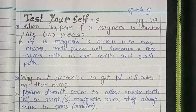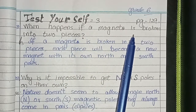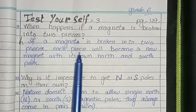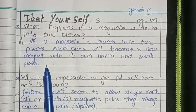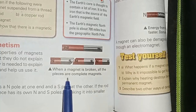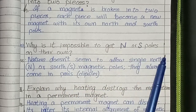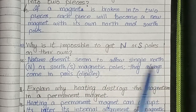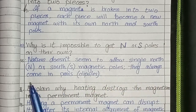Third Test Yourself, page 129. What happens if a magnet is broken into two pieces? If a magnet is broken into two pieces, each piece will become a new magnet with its own north and south poles — all pieces are complete magnets. Why is it impossible to get north and south poles on their own? Nature doesn't seem to allow single north or south magnetic poles; they always come in pairs, called dipoles.